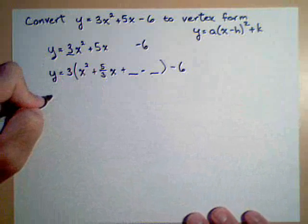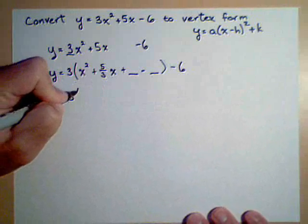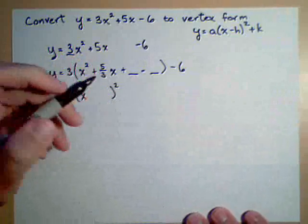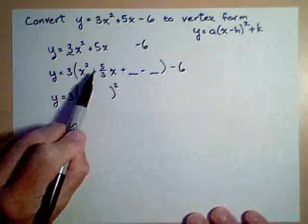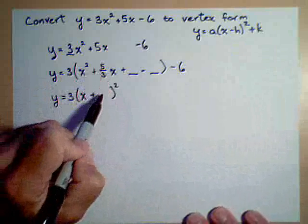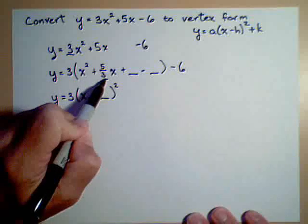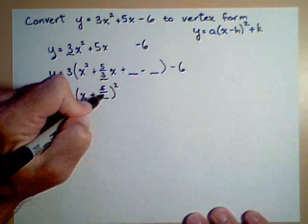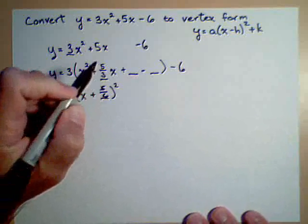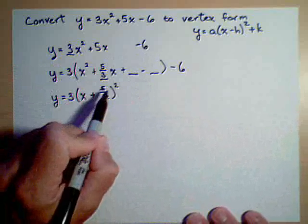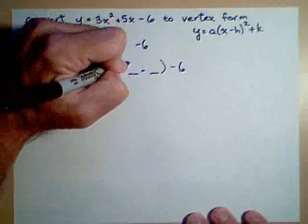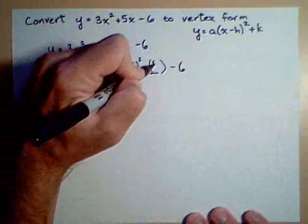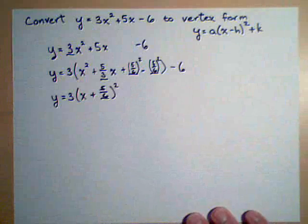Okay, now we go to the next step, which is y equals 3 times the quantity, something squared. And this will always be x. And then we go to what we were looking at last time. The sign here is determined by the sign here. The number that goes here is exactly half of this number. So 5 thirds times 1 half is 5 sixths. That also tells us what goes here and here. Remember, it's this number squared that goes here and here. So we have 5 sixths squared there. And also 5 sixths squared there.